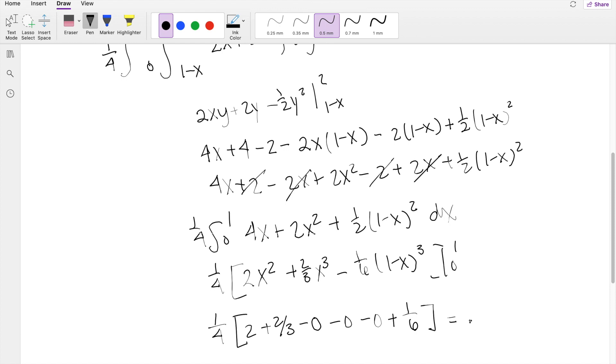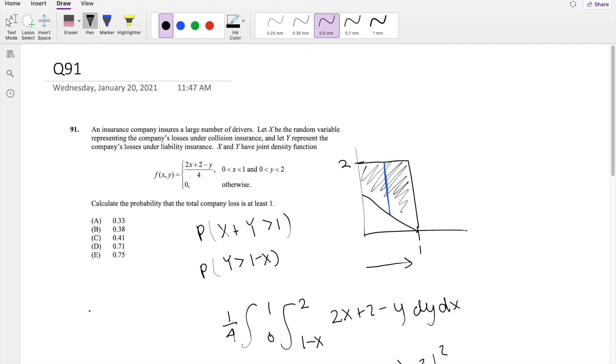So this is equal to 0.708333 repeating, which is approximately equal to 0.71, our answer, D.